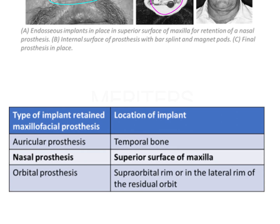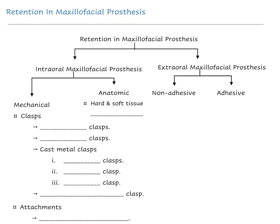This table is important: for auricular prosthesis, implants are placed in the temporal bone; for nasal prosthesis, in the superior surface of the maxilla; and for orbital prosthesis, on the supraorbital rim in the lateral rim of the residual orbit for magnetic retention. These images and illustrations help you understand all the different types of retentive elements used in maxillofacial retention.